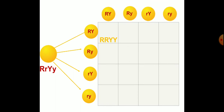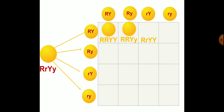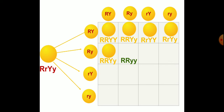Now we cross these gametes. Capital R capital R, capital Y capital Y gives round yellow. Capital R small r, capital Y small y — capital R is dominant, so round yellow. Capital R small r, capital Y small y again gives round yellow. Capital R small r, capital Y small y: round yellow. The second combination with capital R, capital Y and small y gives round yellow. Capital R small r, capital Y small y: round yellow. Next, capital R small r, capital Y small y: round yellow. Capital R small r, capital Y small y: round green.